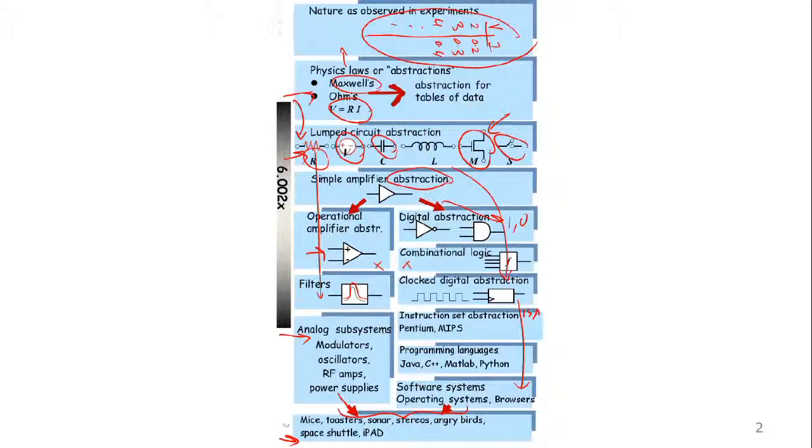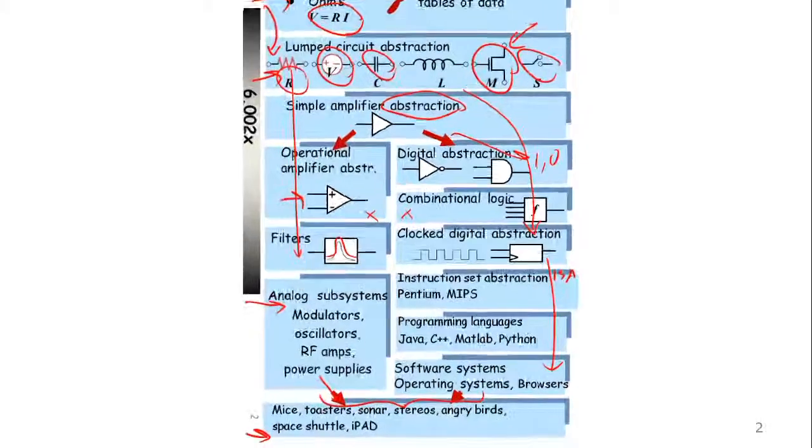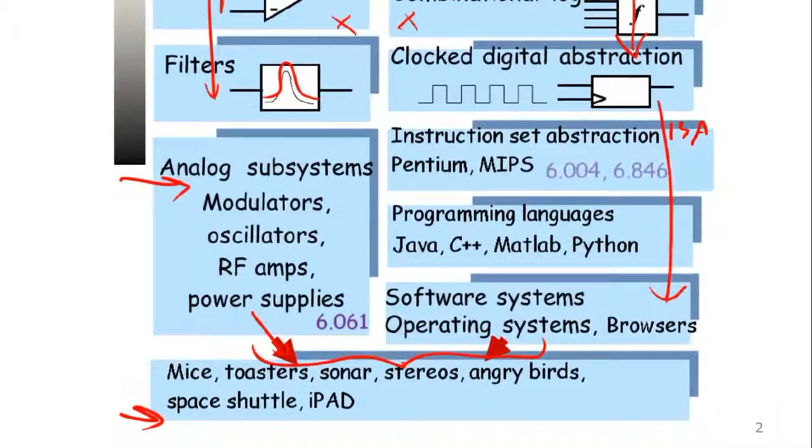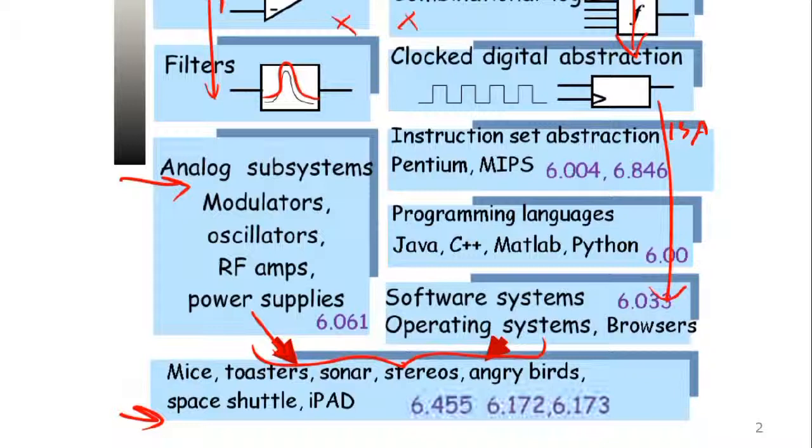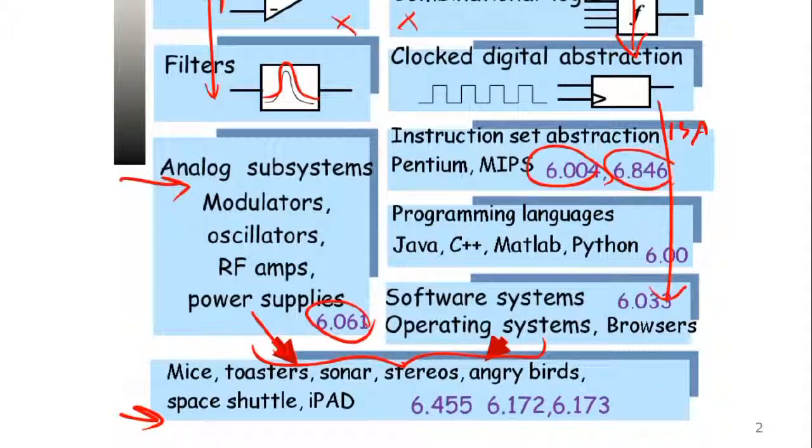So, just to show you why this large map here pretty much covers the typical EECS curriculum, notice that a course at MIT, such as 6.061, will cover power supplies. A course, such as 6.004 or 6.846, will cover computer architecture and parallel computing. A course, such as 6.002, will cover introduction to programming. A course, such as 6.033, will cover basic software systems.